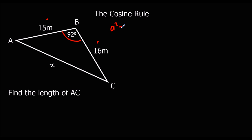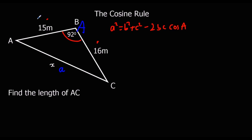So that's the formula I'm going to use: a squared equals b squared plus c squared minus 2bc cos A. Now I need big A to be the angle I know. So 92 degrees is going to be big A. Little a is going to be opposite it. And the other two sides are going to be b and c. It doesn't matter which way round b and c go, as long as they're the other two lengths.